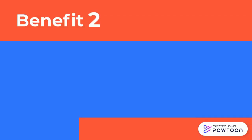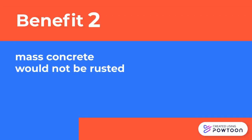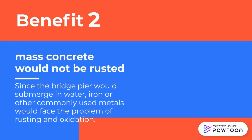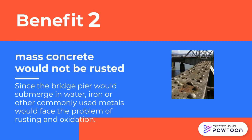Another benefit of using mass concrete is that it would not rust. Since the bridge pier will submerge in water, iron or other commonly used metals would face the problem of rusting and oxidation.